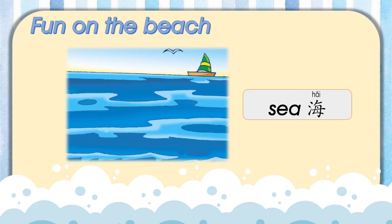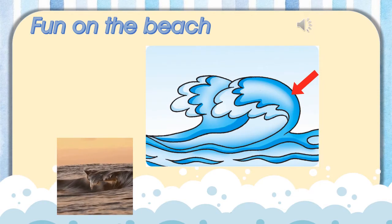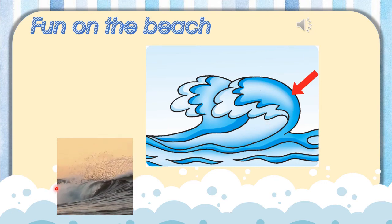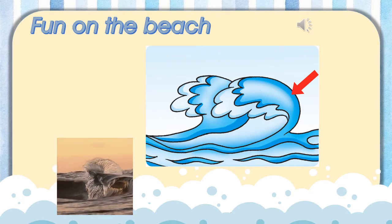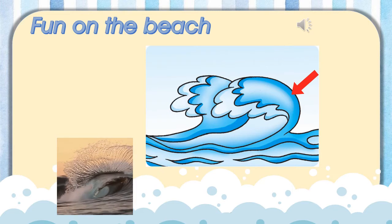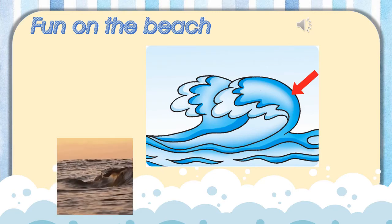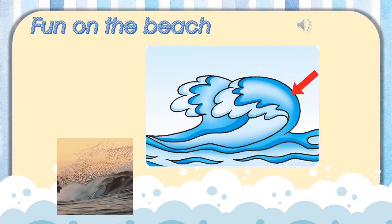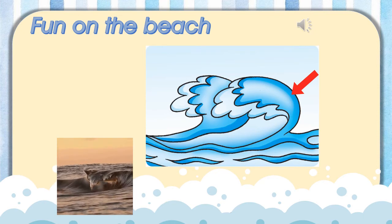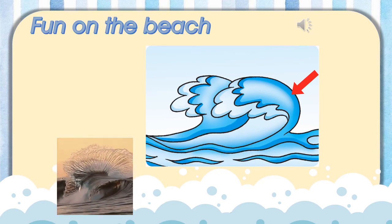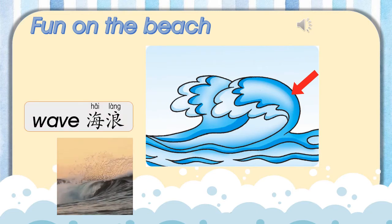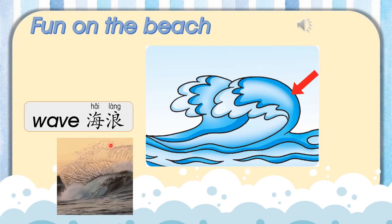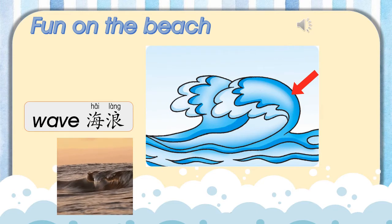Okay, class. At the beach, we also normally will see this. This is called wave. Look at the picture — you see the wave moves like this. Do you hear this sound before? Listen. Okay, this is the sound of the wave. We can hear this sound at the beach. This is called wave. Wave. In Malay: Hai. Lang. See this wave move like this.